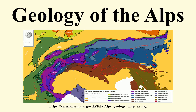The pressure formed great recumbent folds, or nappes, that rose out of what had become the Alpine Tethys and pushed northward, often breaking and sliding one over the other to form gigantic thrust folds.